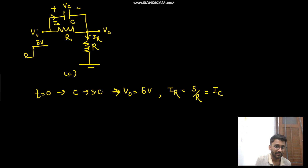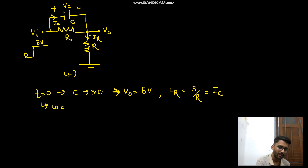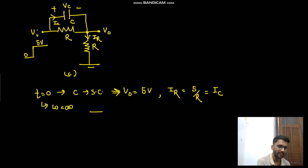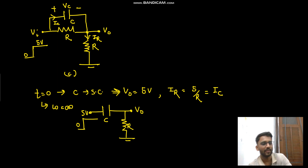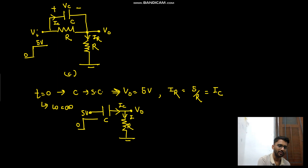The capacitor is acting as a short circuit, so 5/R current flows through the capacitor as well. At t=0 we have infinite frequency content, and at infinite frequency the parallel combination of R and C can be replaced by the capacitor only, since the capacitor provides very low impedance. This confirms that ic equals ir.